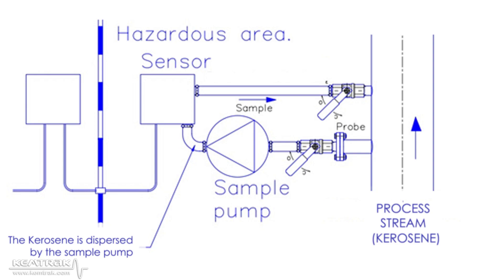For inline measurement, a turbulent flow rate with a high velocity is required to disperse the water in the kerosene. Typically, a turbulent flow greater than 1.5 m/s should be sufficient.